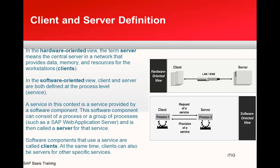Let's look at the client and server definition. The first figure shows a hardware-oriented view, where a client connects to a server over a WAN or LAN. The second is a software-oriented view, where a client — process one — sends a request for service to a server — process two — and the server in turn provisions the service back to the client.